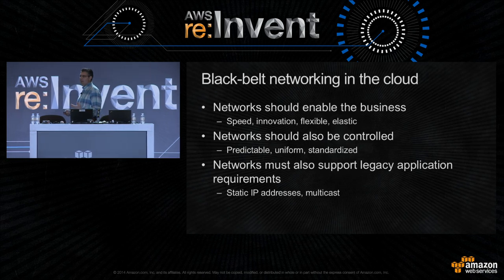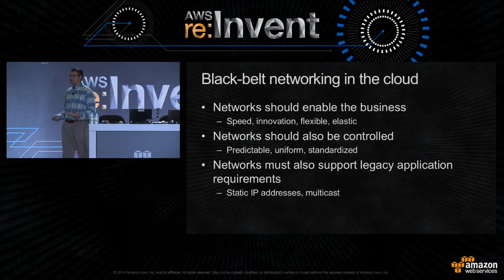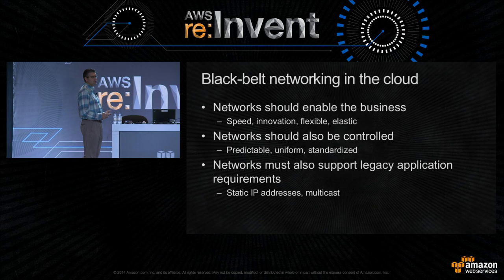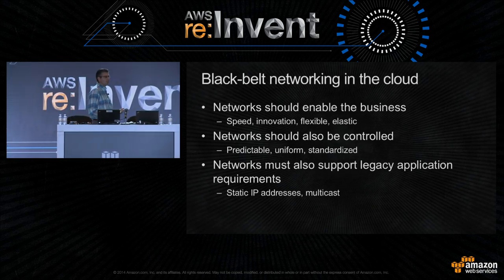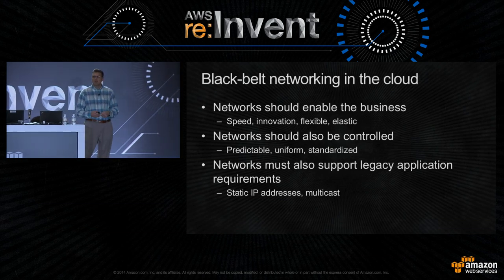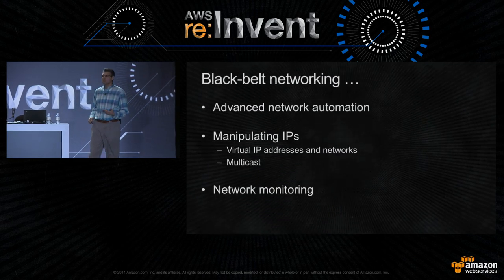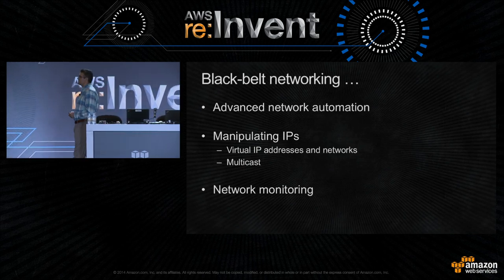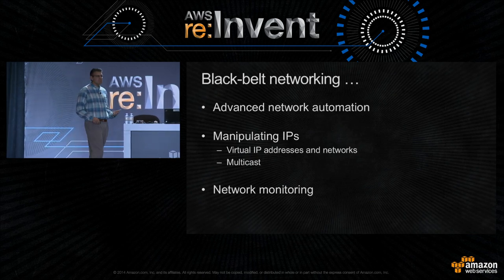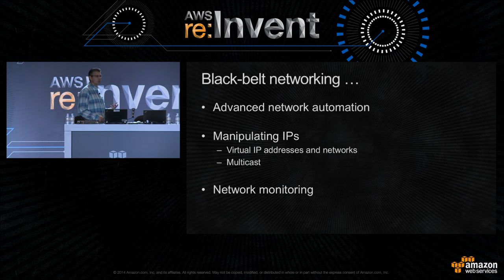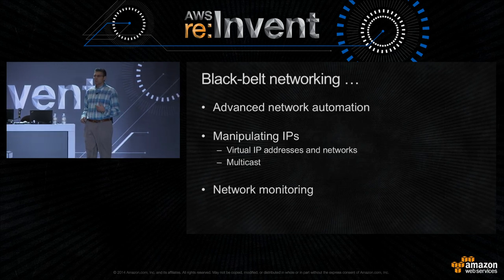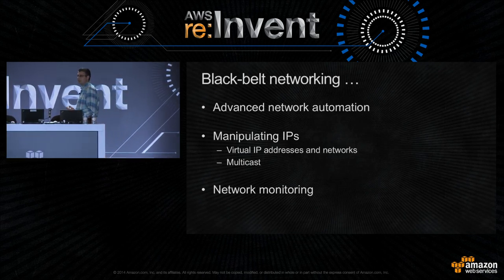At the same time, we have a whole collection of applications to support — applications built for the cloud that take advantage of networking features more natively, but also legacy applications that still require static IP addresses, don't fail over well if IP addresses change, or might support multicast. Today, in this advanced 400-level session, we're going to talk about advanced automation techniques, manipulating IP addresses to create virtual IPs for legacy applications, supporting multicast, and advanced network monitoring techniques.